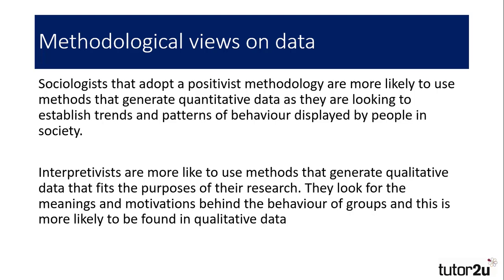Sociological researchers look to collect these types of data in their research, but what type of data they require is often based upon their preferred methodology for conducting research. Positivists are more likely to use methods that generate quantitative data, as this form of data is preferred in observing social facts and allows researchers to establish trends and patterns of behaviour. Methods that generate quantitative data can easily be replicated, which means researchers will be able to use the same methods to measure trends over time and across different cultures. It tends to be used on a larger scale to look at wide-ranging social issues.